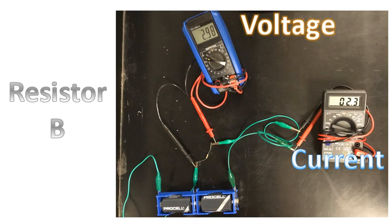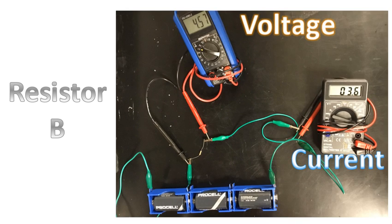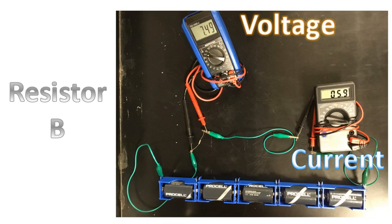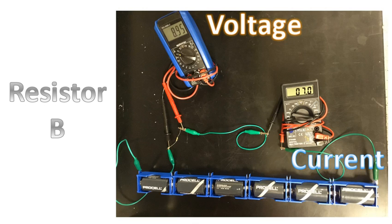Two batteries. Three batteries. Four batteries. Five batteries. And finally, six batteries. Eight point nine five volts. Seven point zero milliamperes.